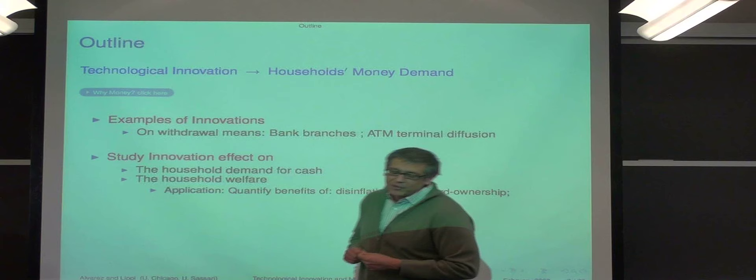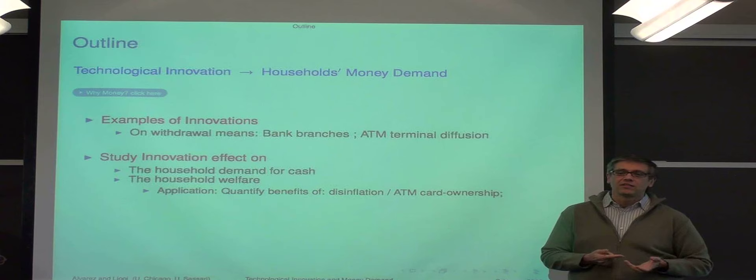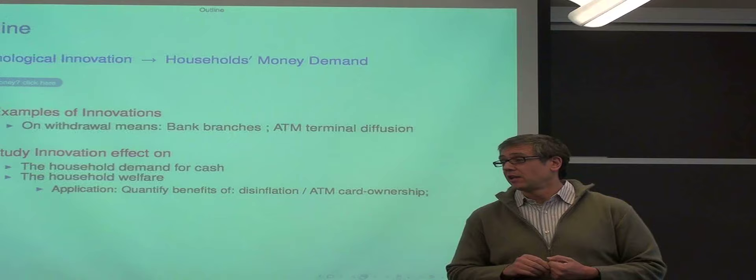Now the examples of innovations that we have in mind are these sort of technology for withdrawal, basically ATM cards, ATM machines, and also having more bank branches. The banking sector in Italy has been really shielded from competition. So that's why in terms of bankization, Italy looks a little bit more backward than the neighbors of comparable GDP per capita.